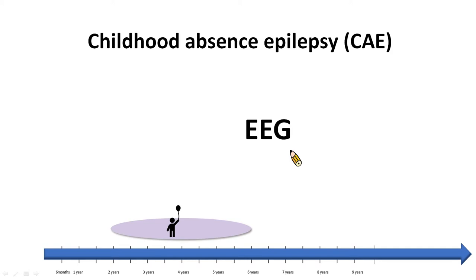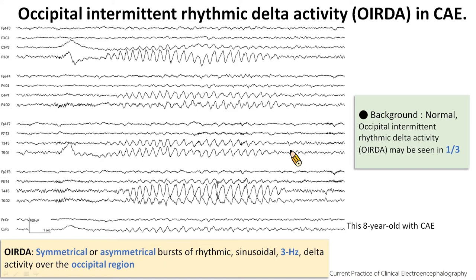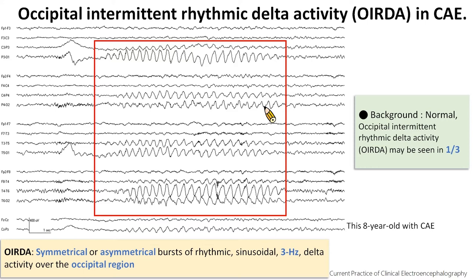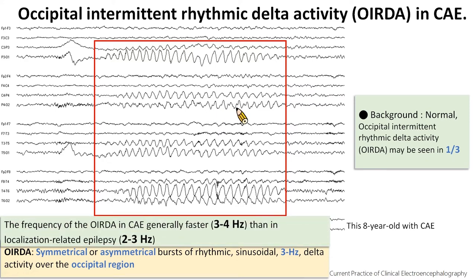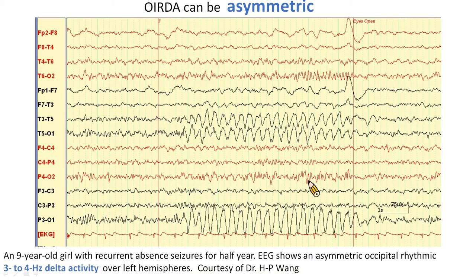Let's take a look at the EEG of childhood absence epilepsy. The background is usually normal. Occipital Intermittent Rhythmic Delta Activity (OIRDA) may be seen in one-third of cases, as highlighted in the red box — there are symmetric bursts of rhythmic sinusoidal delta activity over the bilateral occipital region. Studies show that the frequency of OIRDA in CAE is generally faster, about 3 to 4 Hz, than in localization-related epilepsy, which is about 2 to 3 Hz. OIRDA can be asymmetric in some patients, as shown here over the left occipital region.